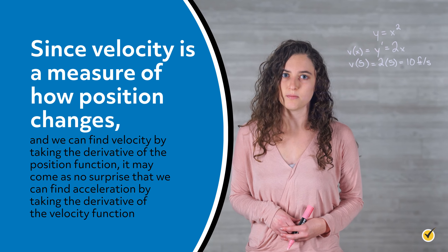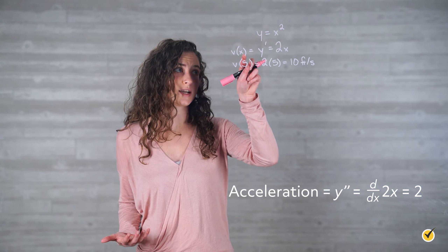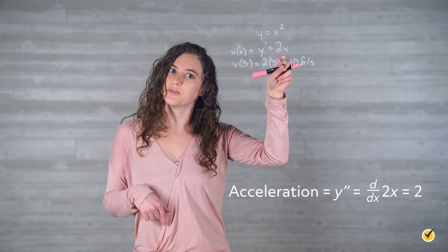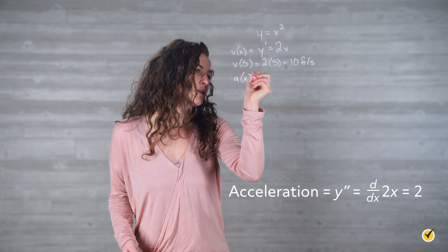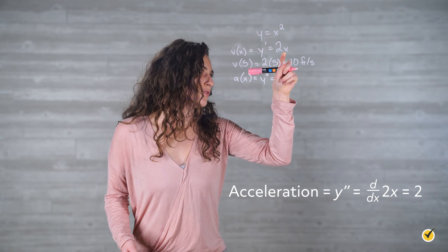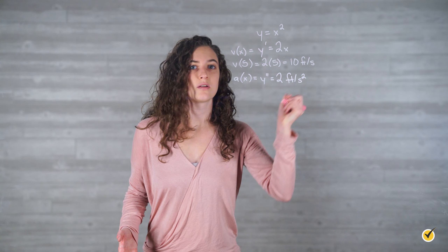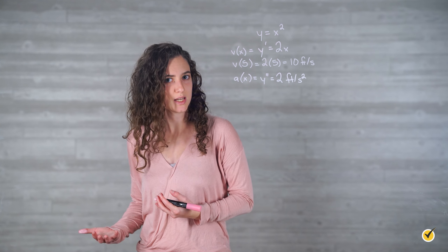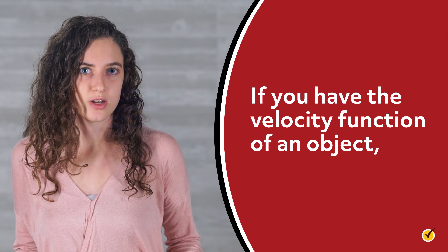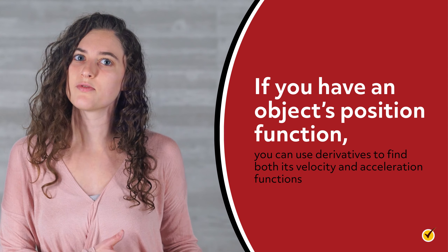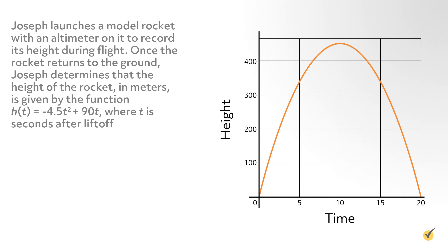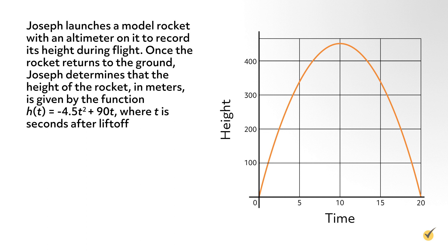Remember how we talked about acceleration in the beginning of this video? Acceleration is a measure of how velocity changes. Since velocity is a measure of how position changes and we can find velocity by taking the derivative of the position function, it may come as no surprise that we can find the acceleration by taking the derivative of the velocity function. So since the tire has a velocity function of v of x equals 2x, its acceleration function is equal to the derivative of 2x. The acceleration function a of x is equal to y double prime, or the derivative of 2x, which is 2. The unit for the tire's acceleration is feet per second squared, because we're considering how the velocity in feet per second is changing per second. So if you have the velocity function of an object, you can take its derivative to find the acceleration function. Similarly, if you have an object's position function, you can use derivatives to find both its velocity and acceleration functions.